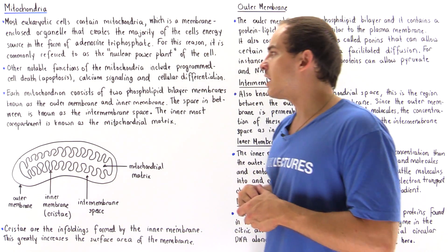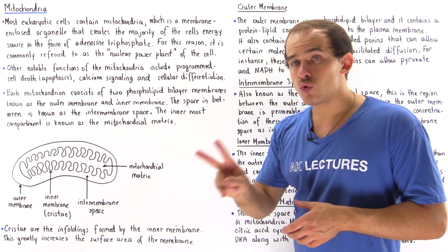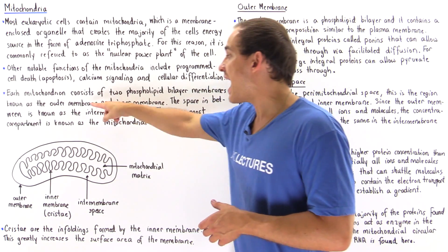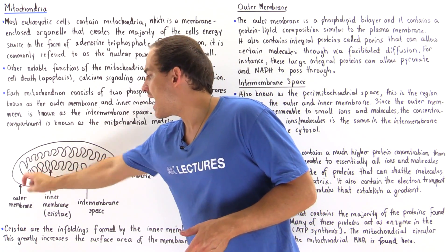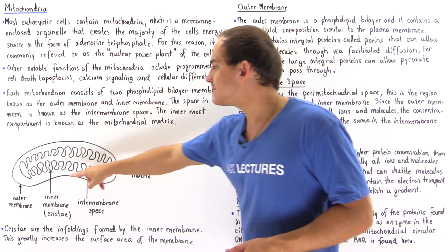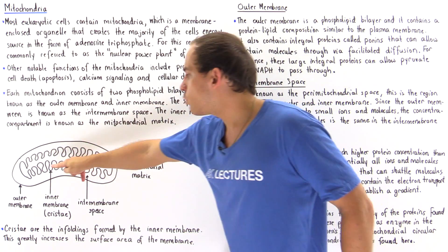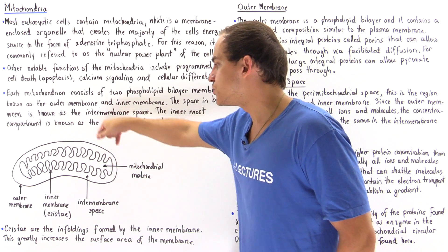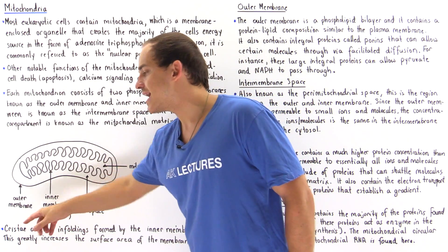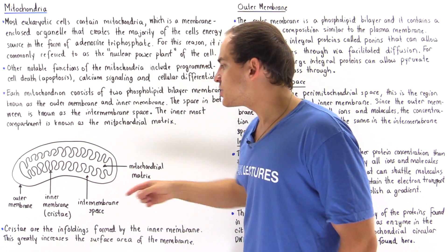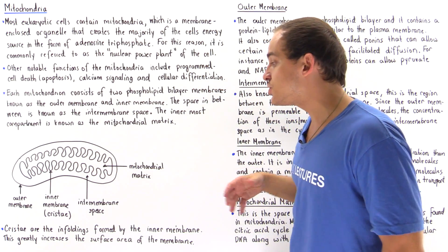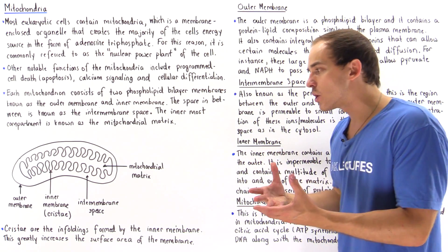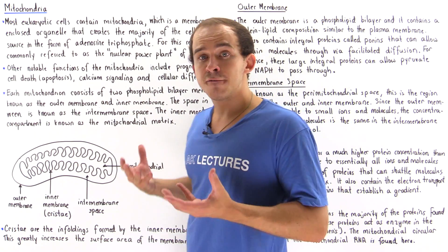Each mitochondrion consists of two phospholipid bilayer membranes: the outer membrane and the inner membrane. The inner membrane creates infolds known as cristae, and the reason for these infolds is to increase the surface area of the inner membrane.